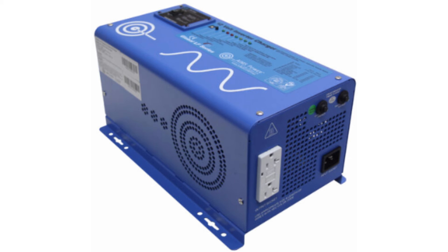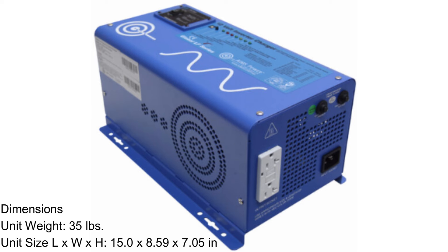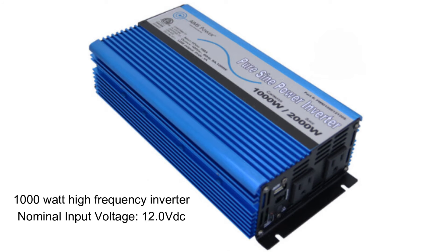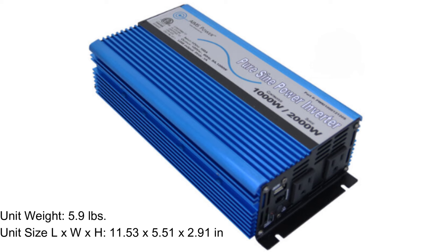This makes high frequency inverters easier to install and more suitable for applications where space is limited. For example, a low frequency inverter from AIMS, like the 12-volt 1000-watt model, can weigh up to 35 pounds, whereas the AIMS high frequency 12-volt 1000-watt inverter weighs about six pounds — a significant difference.